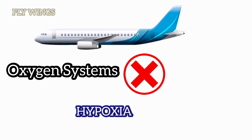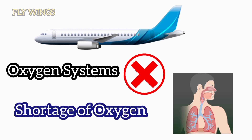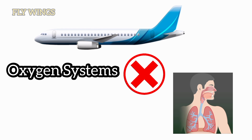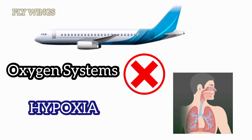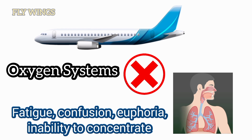If the oxygen system is not installed in the aircraft, passengers and crew would be affected by hypoxia. Hypoxia is defined as a lack of oxygen in the body tissues. This can be caused either by a shortage of oxygen in the air being breathed, or by physiological issues affecting blood circulation or the quantity of oxygen carried by hemoglobin in the blood.